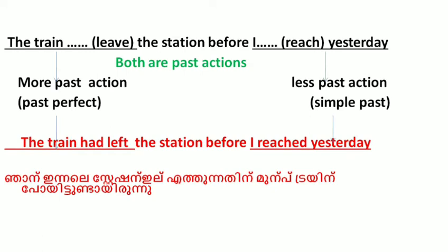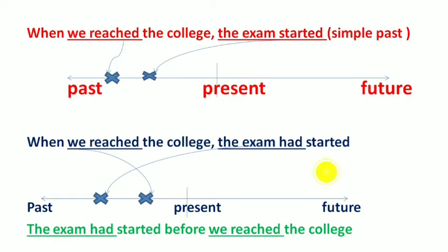Consider the example: 'When we reached the college the exam started.' Here both actions are in simple past — 'we reached' and 'the exam started' are both at the same past level. But compare: 'When we reached the college the exam had started' — here the exam starting happened earlier.